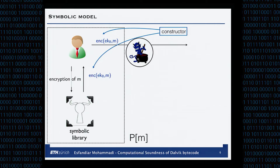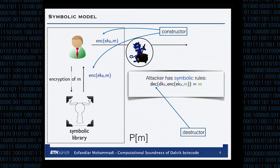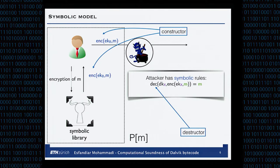The terms are constructed out of three different parts: fresh names, constructors which are uninterpreted function symbols, and destructors which are basically functions on terms. You can describe them with symbolic rules. Destructors are written on the attacker side and constructors on the protocol side, but it's pure convention — both can use constructors and destructors.